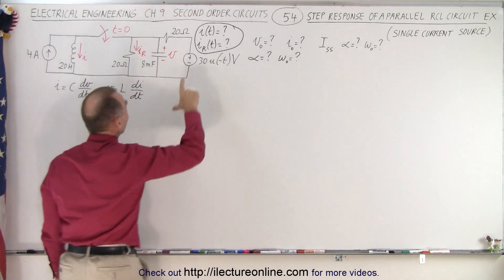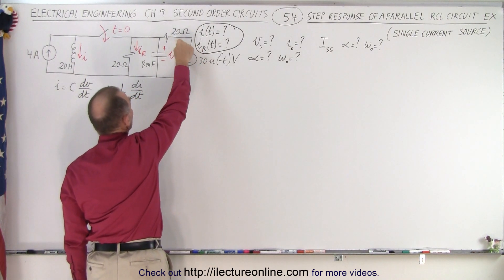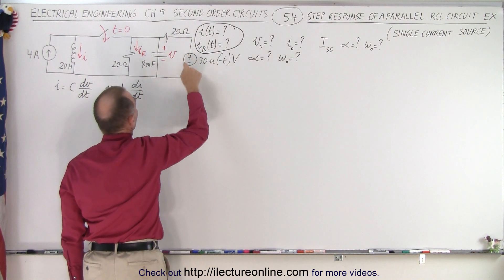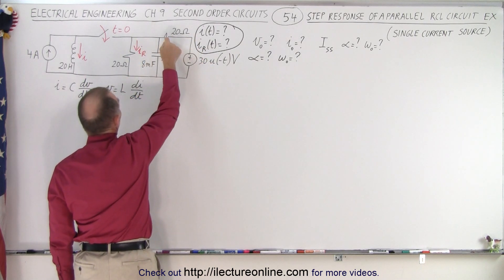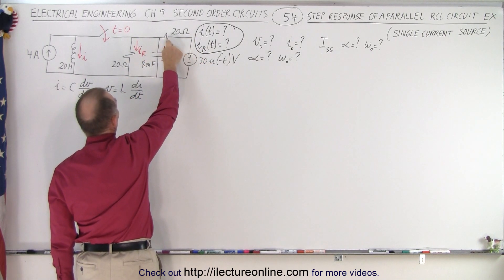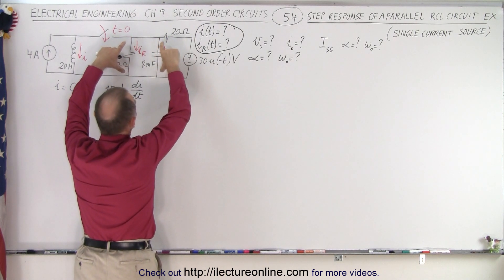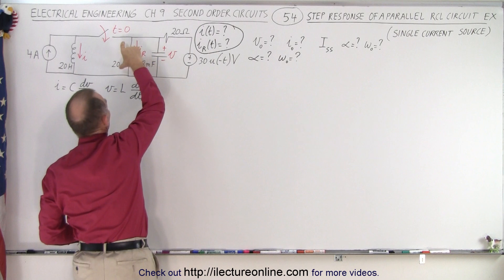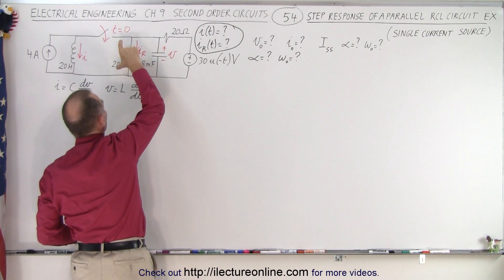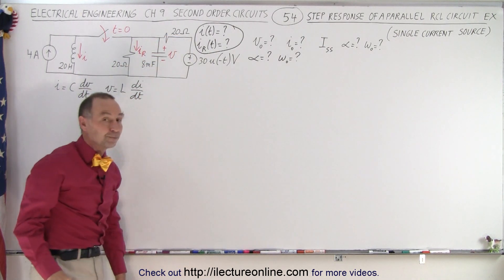We simply have 4 amps of current flowing through the inductor until the switch closes. Over here we have 30 volts across from here to here. The voltage then drops across this resistor, and is also across these two branches, so that the voltage across the capacitor is the same as the voltage across this resistor but not across that resistor.